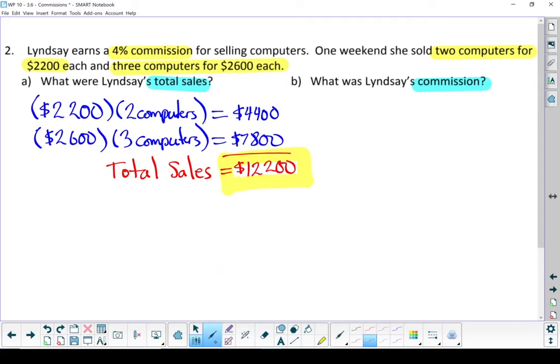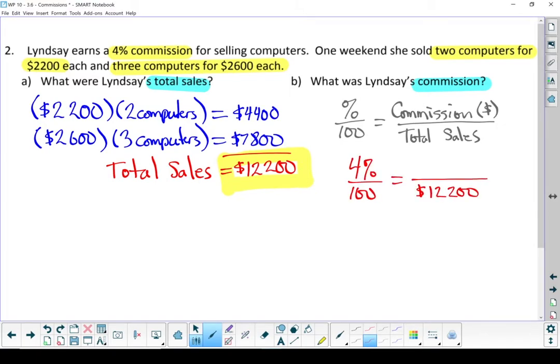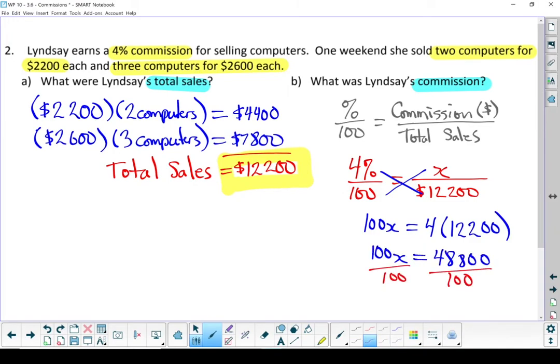Next part of the question asks, What was Lindsay's commission? As always, let's start with the formula. We can put our numbers in. And we're trying to solve for how many dollars she made in commission. I'm going to put an X up there. And cross multiply. Divide both sides by 100. And our commission is $488.